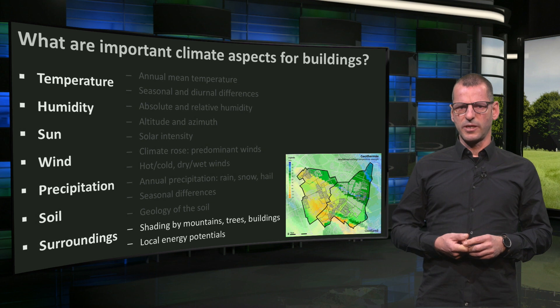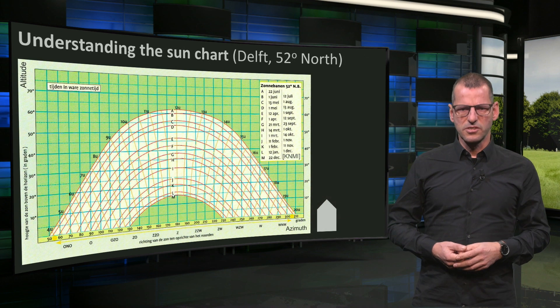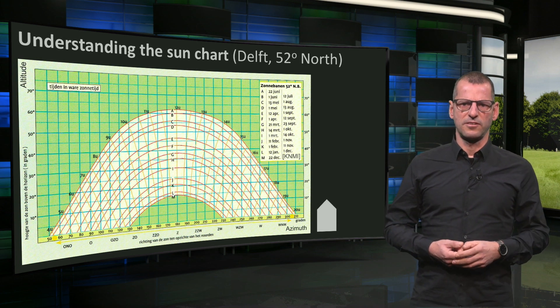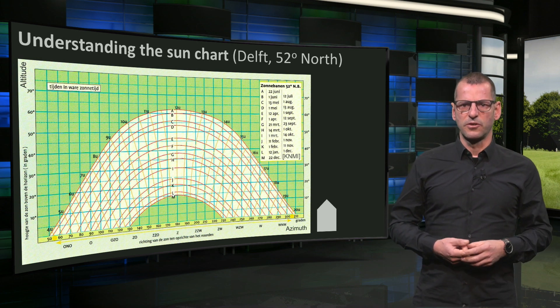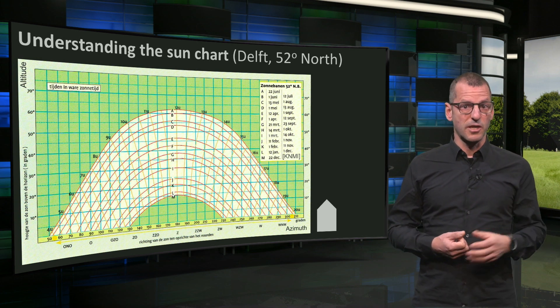We cannot go into all these aspects, but let's have a look at the sun. This is the sun chart of Delft, my city, at 52 degrees northern latitude. Every place on earth has a different sun chart. I will explain this particular chart step by step.